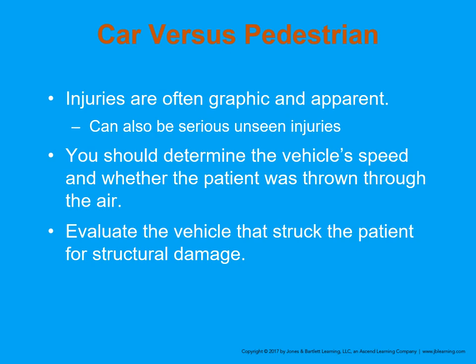Car versus pedestrian injuries are very serious. We may not see exactly how injured the person is, or how fast the vehicle was going when they were hit. Typically, there is an up-and-over pattern. Adults have a tendency to go up and over the car, whereas pediatric patients go down and under the vehicle.